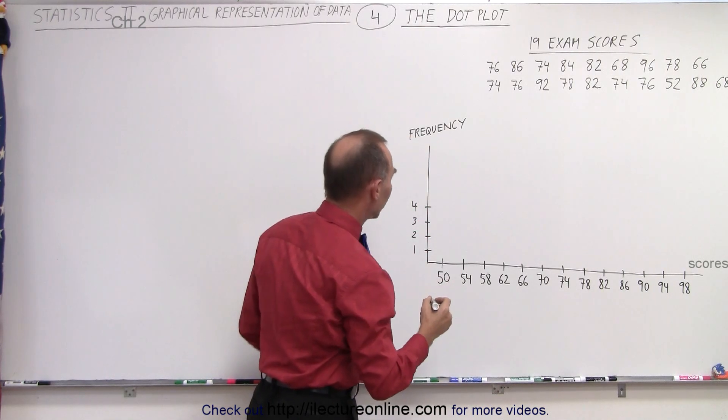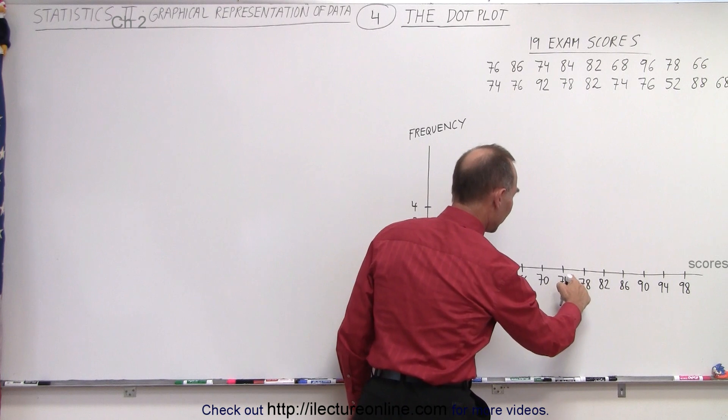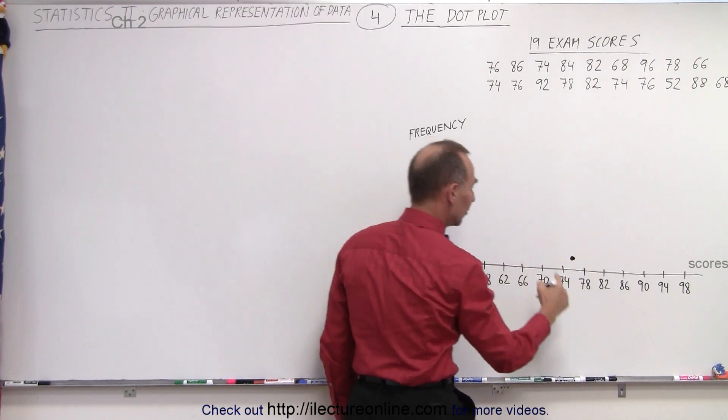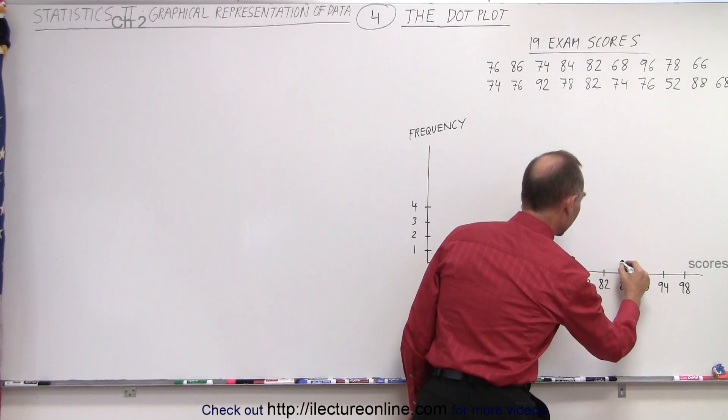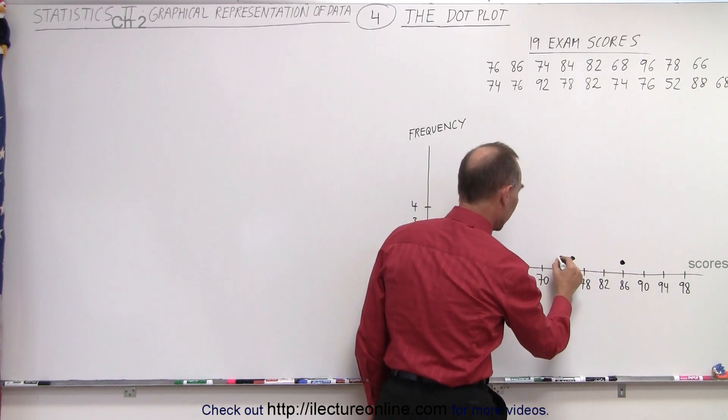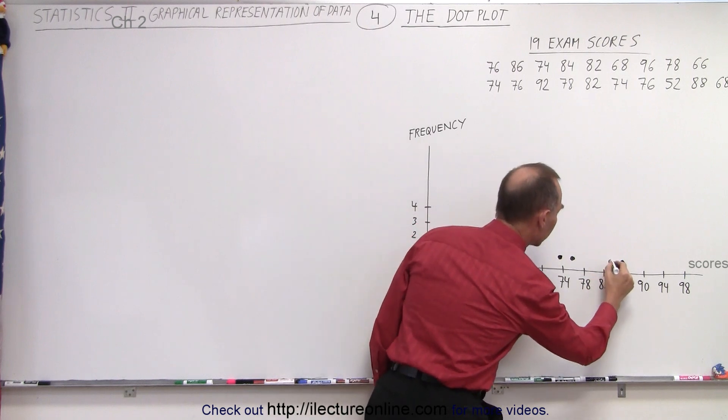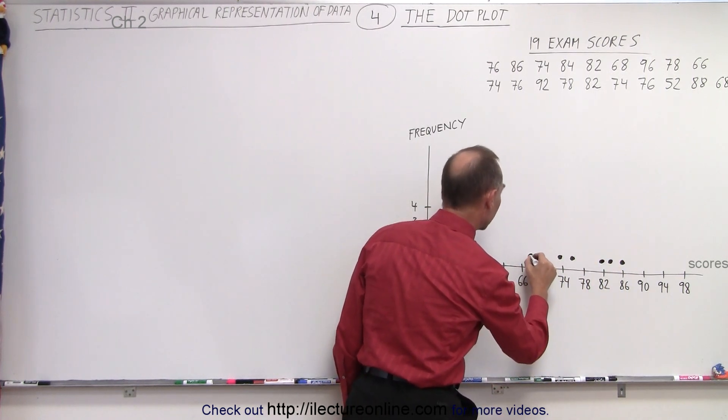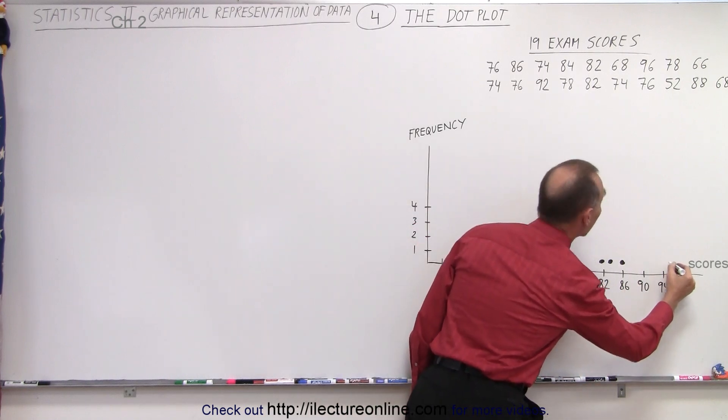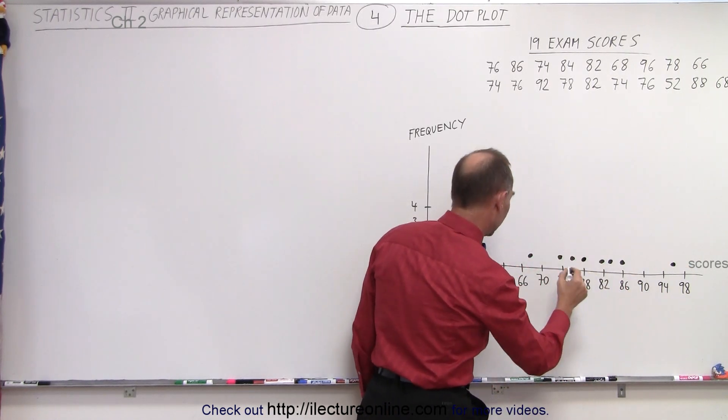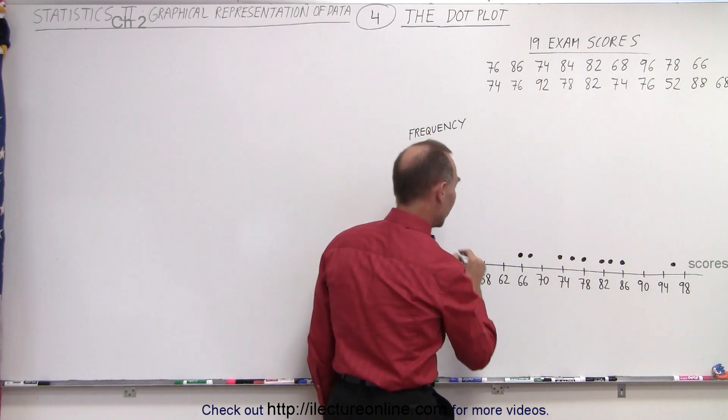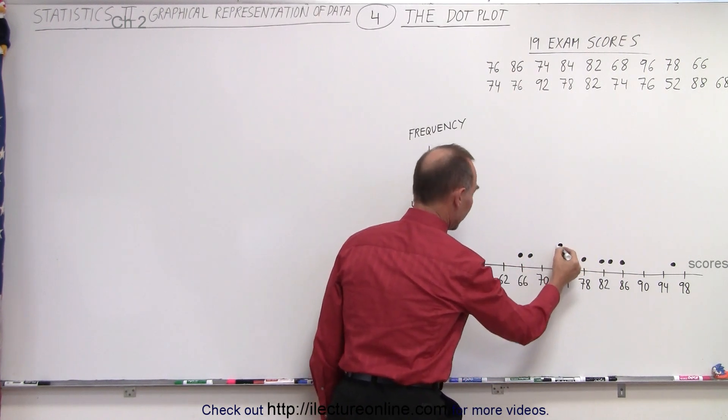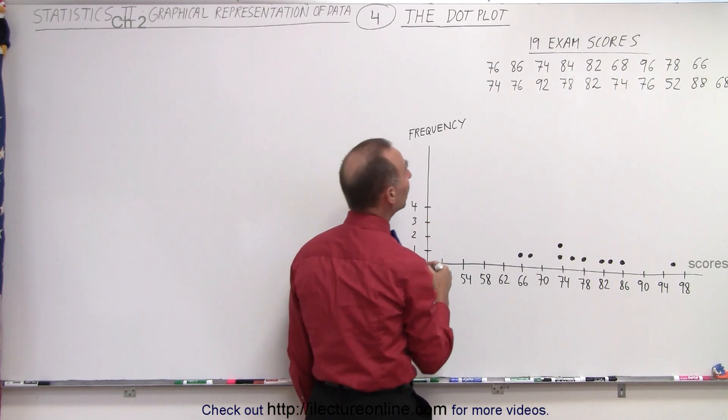So we'll go to the first row: 76, that would be halfway between here, so we'll put a dot for 76. 86, we'll put another dot. 74, another dot. 84 right here. 82. 68, and I think you begin to see the pattern here. 96. 78. 66. 76. 74, a second one with 74, so we'll put a dot right above there. So we see the frequency right here: 1, 2, 3 on up.